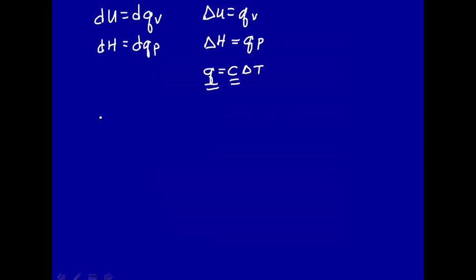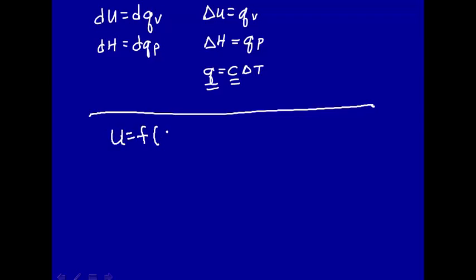Let's start with this assertion: internal energy is a function of two variables, temperature and volume. This is for PV work — T is related to Q and V is related to PV work. Just think of it as: if temperature changes, U changes; and if volume changes, U changes.